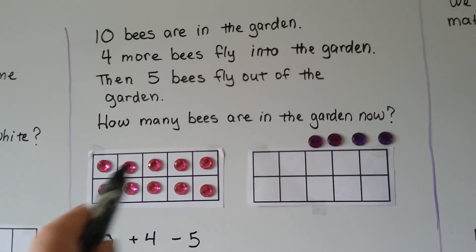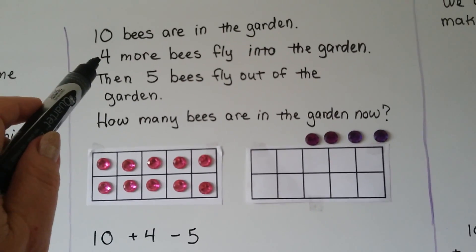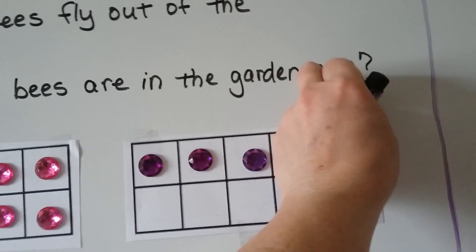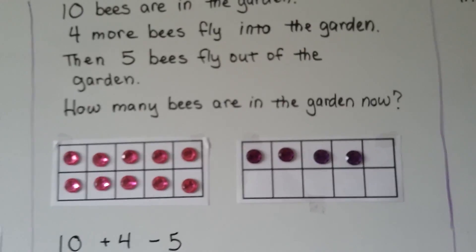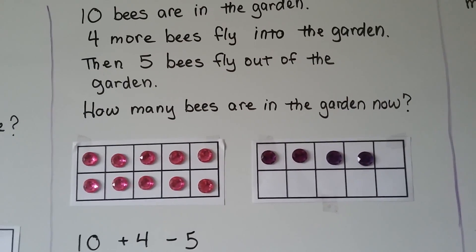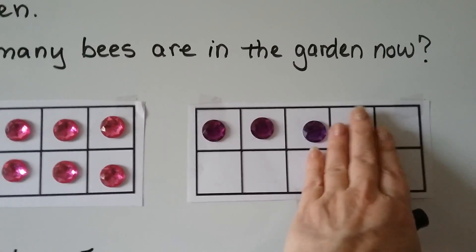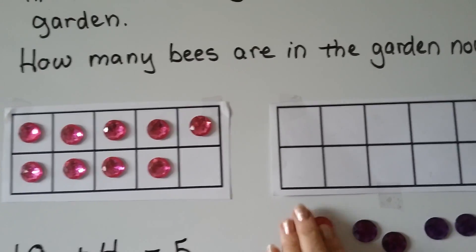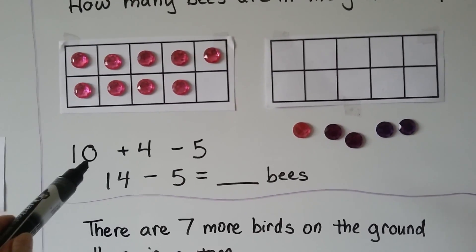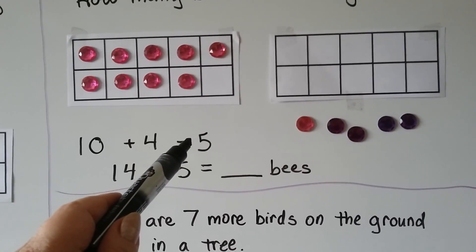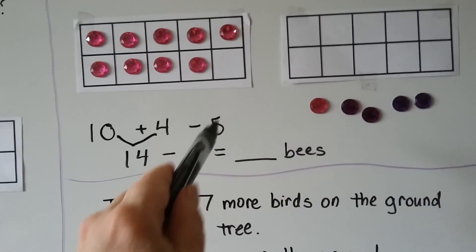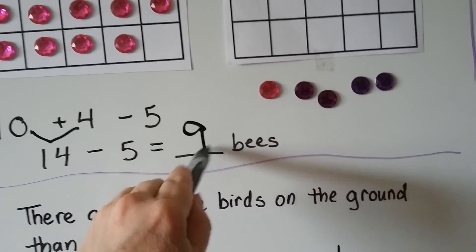There were 10 bees, so we have 10 pink gems for the 10 bees in the garden. It says 4 more bees fly in, so we put 4 more counters in another 10 frame: 1, 2, 3, 4. Now how many bees are there? 10, 11, 12, 13, 14. Then 5 bees fly out — we need to take 5 counters away: 1, 2, 3, 4, 5. How many counters are left over? 9. We had 10, 4 more came, then 5 left. 10 plus 4 is 14. 14 minus 5 is 9. So 9 bees are still in the garden.